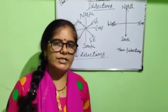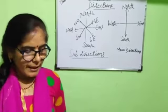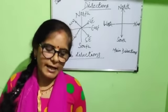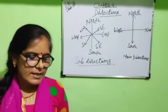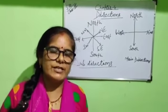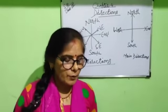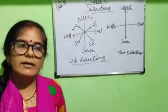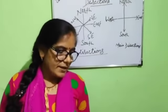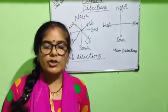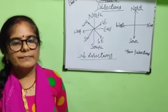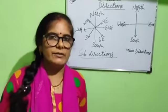Direction ka gyan hona hamare liye bahut zaroori hai. Agar hum kisi bhi position ko jaanne ke liye — kisi person, place aur thing ki position jaanne ke liye — humein direction ka gyan hona bahut zaroori hai. Jab aap kisi crossing pe khade hon aur aapko railway station ya post office jaana ho, toh direction ke baare mein jaanna bahut helpful hoga. Do you know, children — the pole star or Polaris does not change its position. Pole star means Dhruv Tara, aur iska direction kabhi bhi change nahi hota.